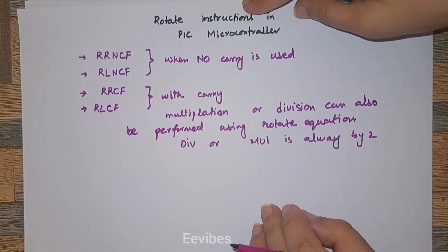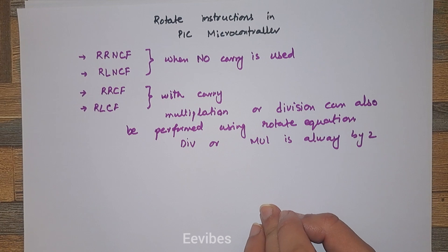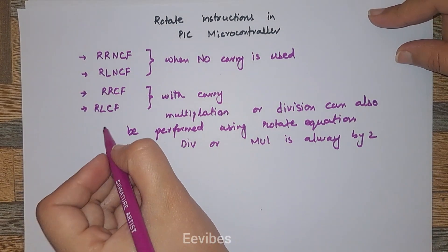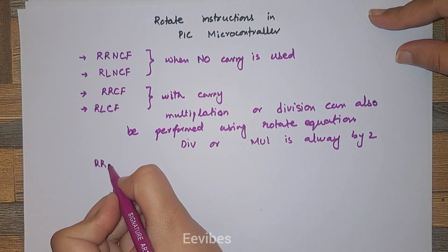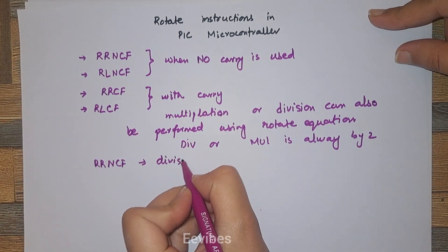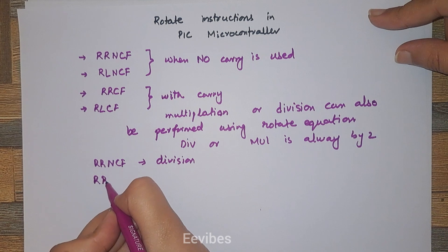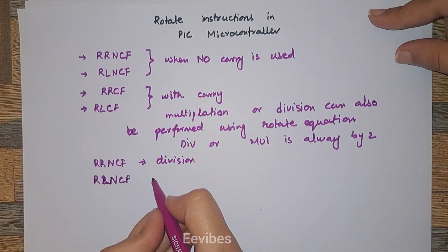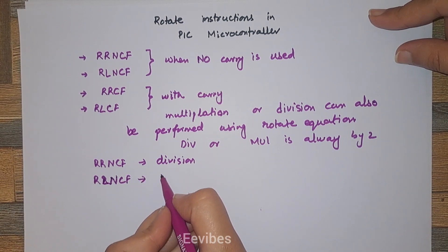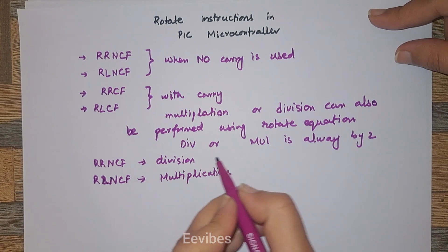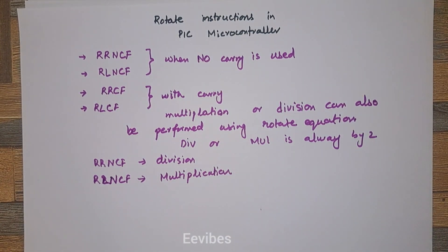Whenever you rotate right the contents of the file register, it actually performs division. Rotate right excluding the carry performs division, while rotate left excluding the carry performs multiplication. Let's see how these two instructions work.